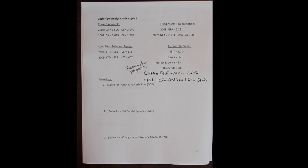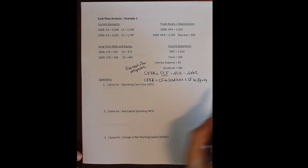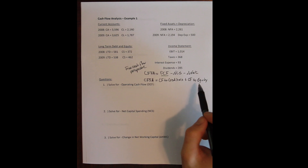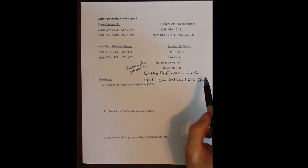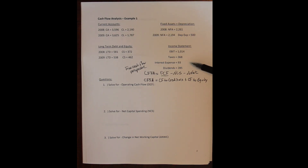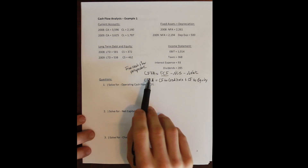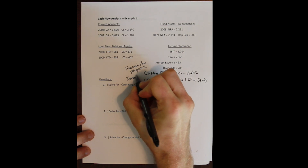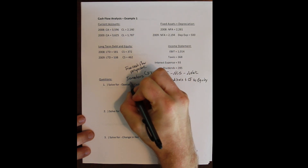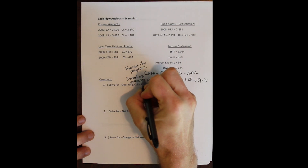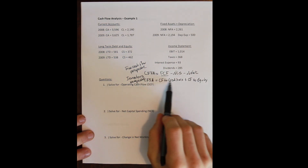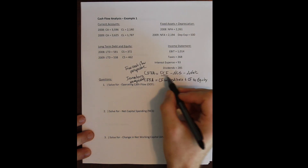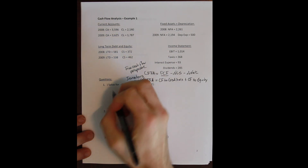Now we'll show how to move from accounting statements to something a financial manager actually uses. We'll start by solving for the free cash flow perspective — sometimes called the investment perspective. Remember, the identity means we must get the same number from either side. We'll solve for operating cash flow first.